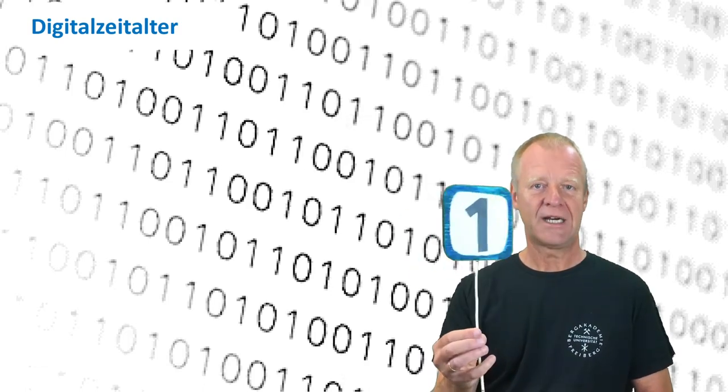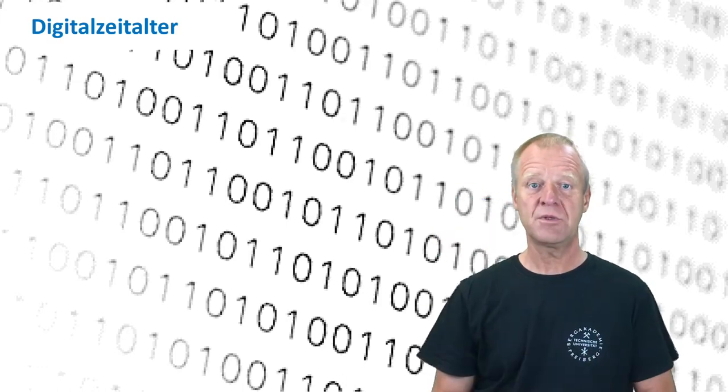That is zeros and ones, as you can see here. It is said that with bits you can supposedly do everything you like. Who would like to try that out today? First, we can for example try to order a drink with bits.